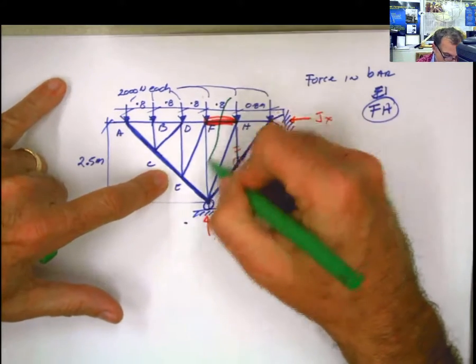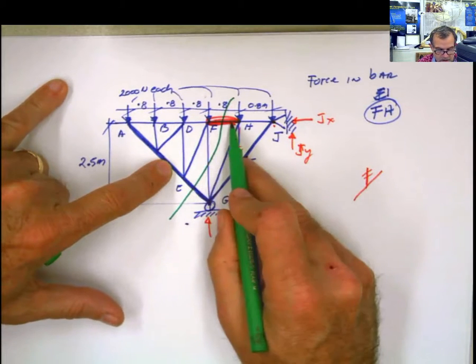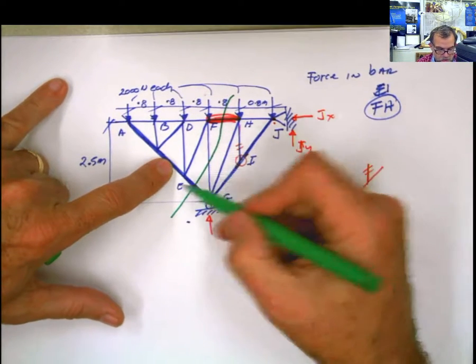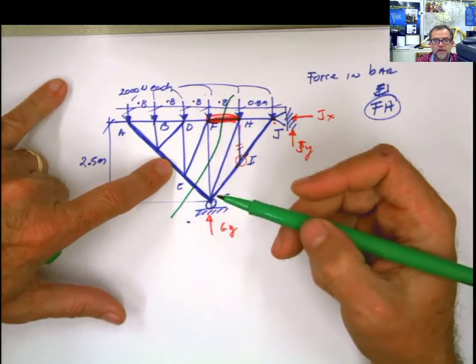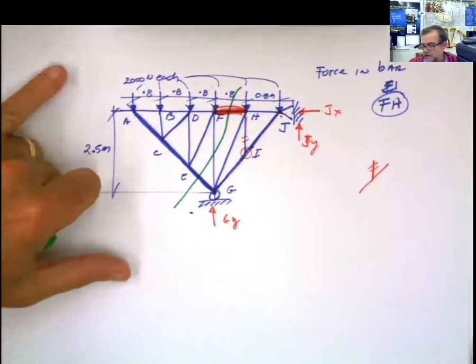And I don't know if you realize that if I do this here, I'm cutting the bar that I need, FH, and two more. Remember, the method of the section, you can cut up to three unknown bars. And if I use this side, I don't even have to calculate the reactions.